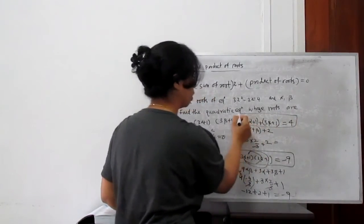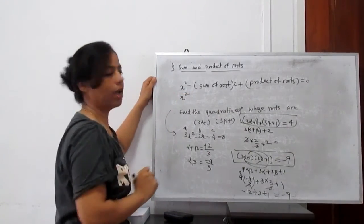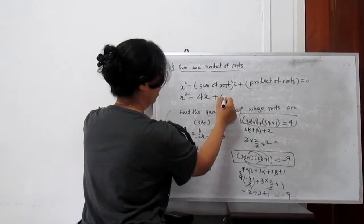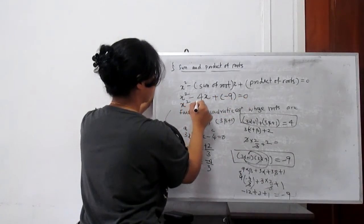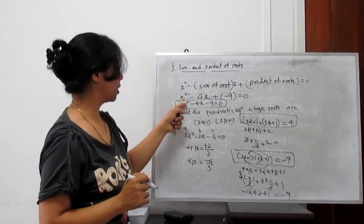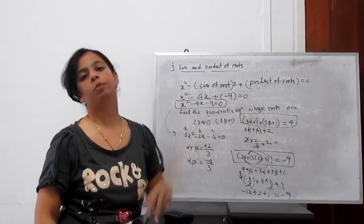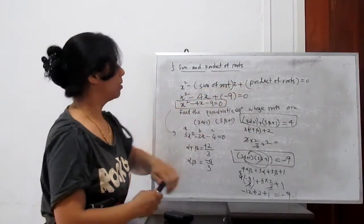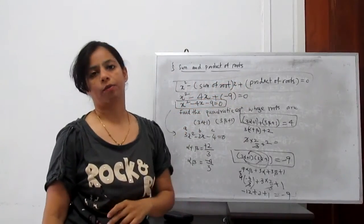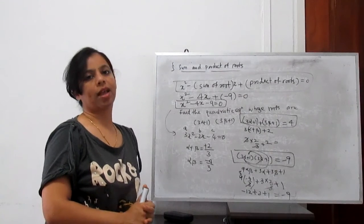Sum of roots is 4 and product of roots is -9. So the new quadratic equation is x² - 4x - 9 = 0. This is the required equation whose roots are 3α+1 and 3β+1. Remember the formula: the new quadratic equation is x² - (sum of roots)·x + (product of roots) = 0. That's all for today. We will discuss more problems on this topic. Thank you very much.